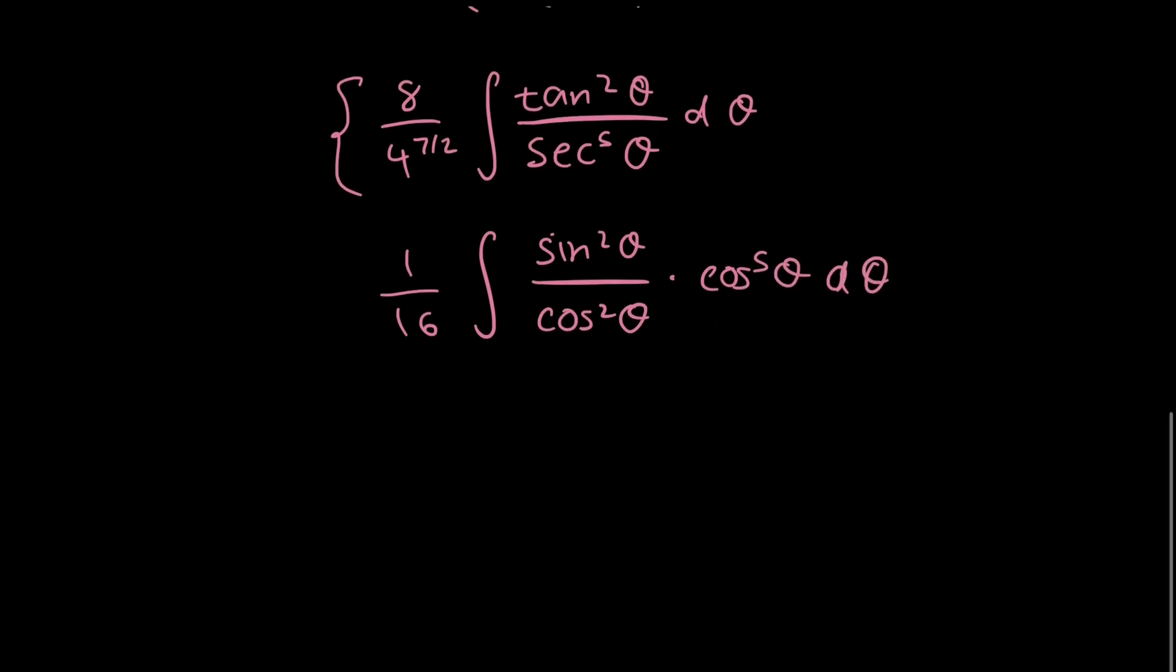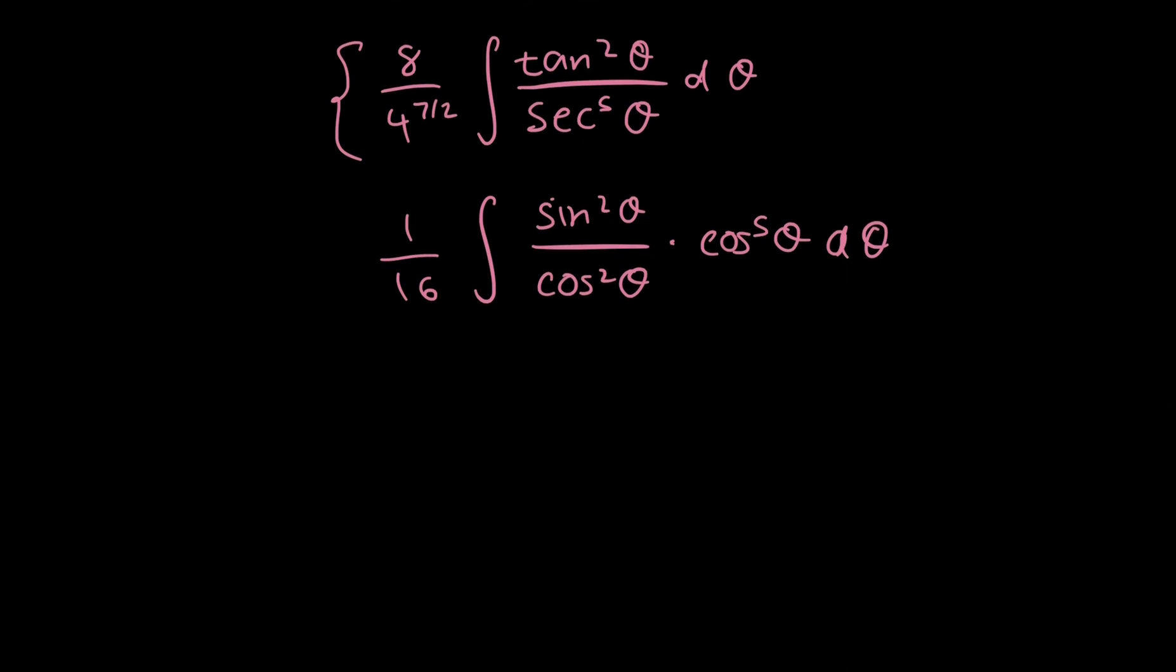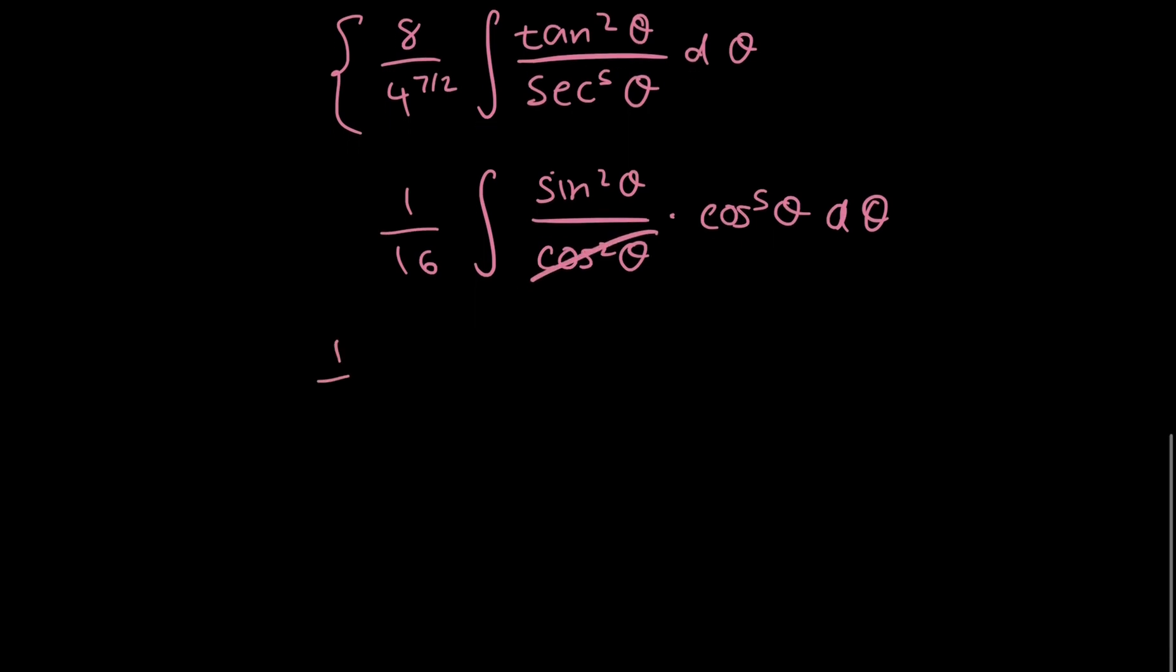So there's just a lot of simplification going on, and that's just the bulk of the work for these kind of questions. Anyways, so I'll lose my cosine in the denominator, and it all reduces to sine squared theta cosine cubed theta d theta. And this is the most simplified form I have so far.